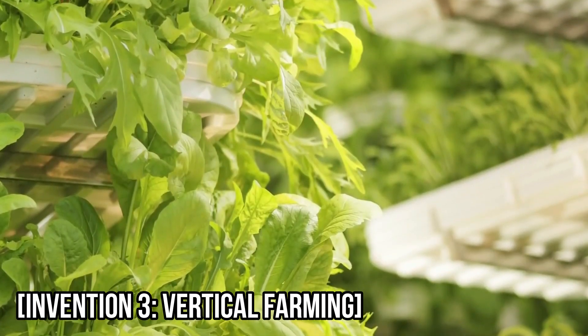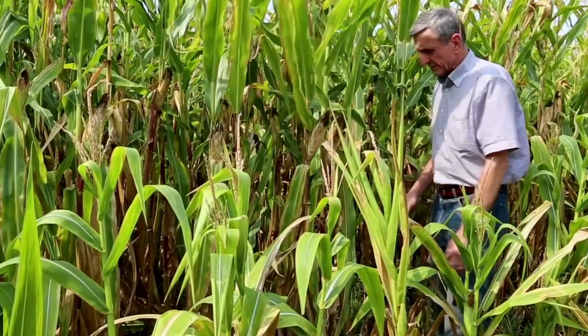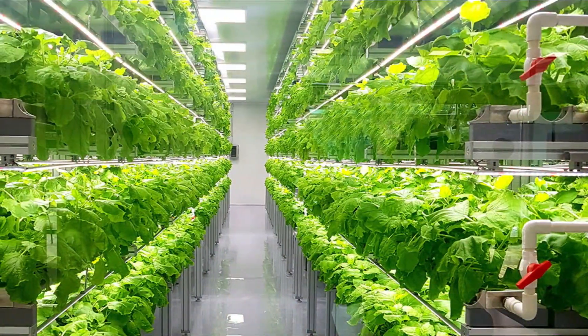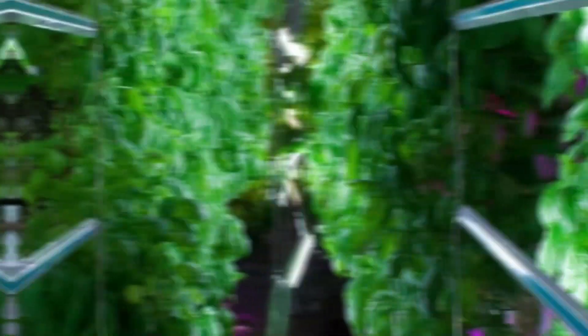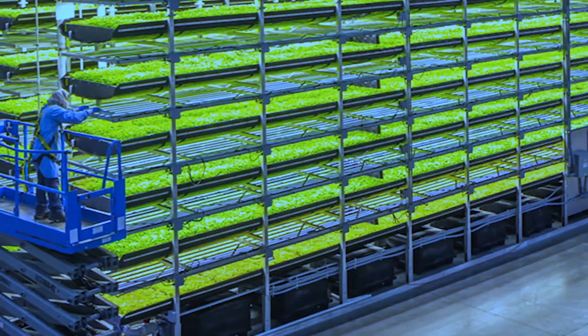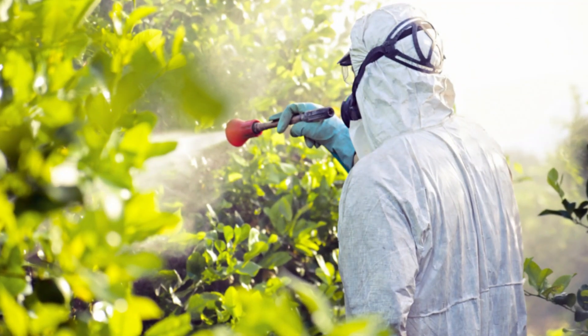Invention 3: Vertical Farming. Vertical farming is a way of growing crops in a controlled environment, without the need for soil or natural light. This technology has the potential to increase food production, reduce water usage, and eliminate the need for pesticides.